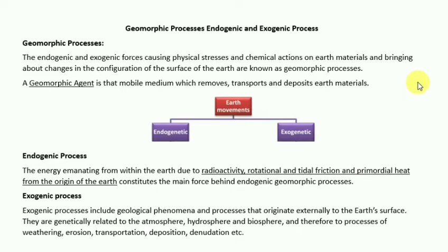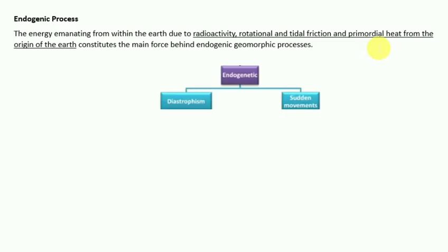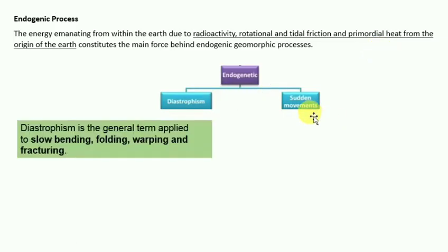Endogenic forces occur due to radioactivity, rotational and tidal friction, and primordial heat. Endogenic processes are divided into two parts: first is diastrophism, and second is sudden movement. Diastrophism is a general term applied to slow bending, folding, warping, and fracturing.